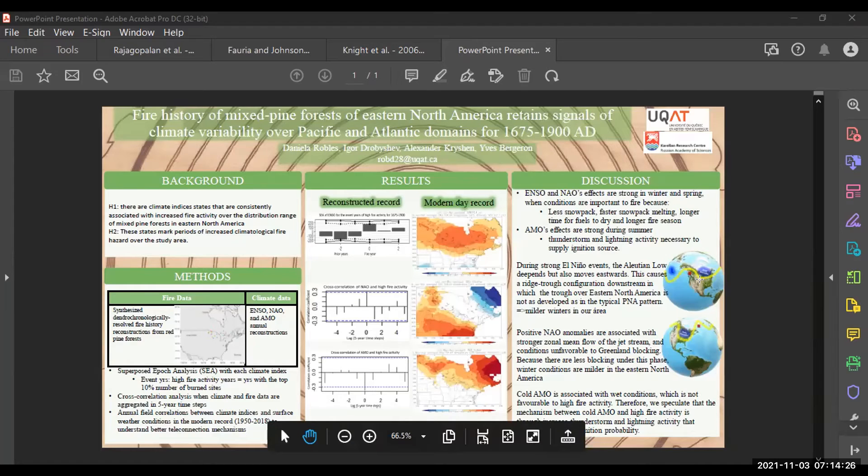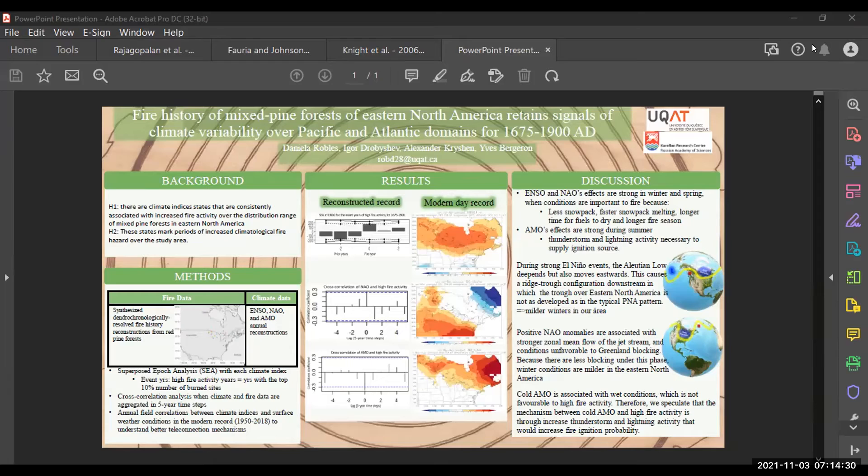I'm going to explain to you why I think we found an association between El Niño and positive NAO with fire activity. First of all, I chose these indices because they are known to affect the general atmospheric circulation patterns in the northern hemisphere. They affect the jet stream in the mid latitudes, the polar front jet. And because this jet stream controls the weather and extreme weather in the mid latitudes, including eastern North America, then it's expected that there's going to be a teleconnection between these indices and fire activity in the area.